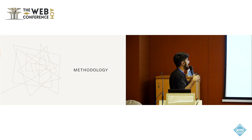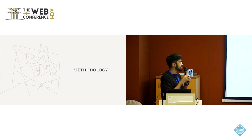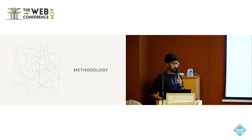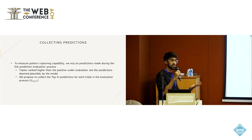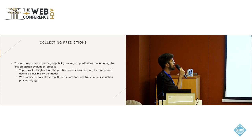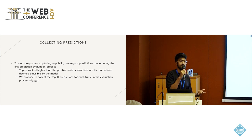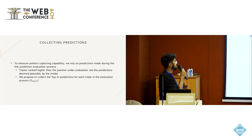Regarding the methodology: we propose a model-agnostic framework to measure to what extent an embedding model captures an inference pattern. Model-agnostic means it is independent of the inner workings of any embedding model, so any knowledge graph embedding model can be assessed. The first step is the collection of predictions. In practice, triples ranked higher than the positive triple under evaluation are predictions the model is making — effectively missing triples it predicts to be true. We propose collecting the top-K predictions for each triple in the evaluation process.